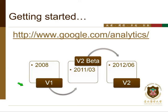To get started, go to Google and search for Google Analytics — the first link will be the Google Analytics service. The tool we are using is Google Analytics because it's free and easy to use. The first version was released in 2008. In 2011, version 2 beta was released, and last year they officially replaced version 1 with version 2, which is now the official version. Version 2 differs significantly from version 1 in both interface and setup.